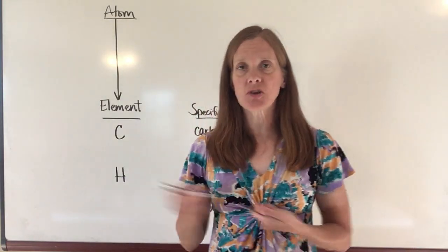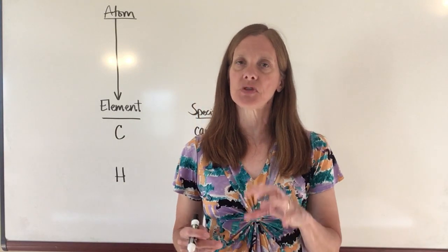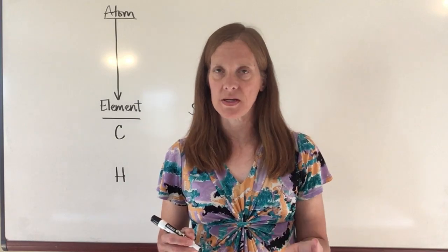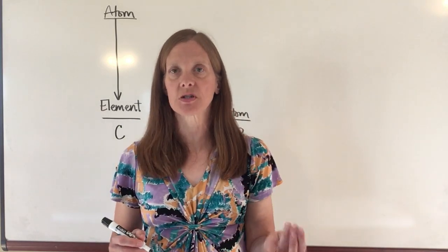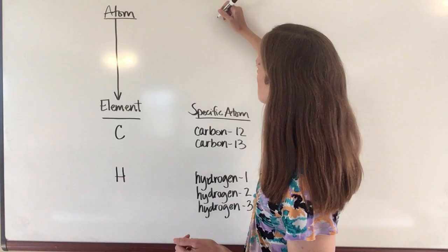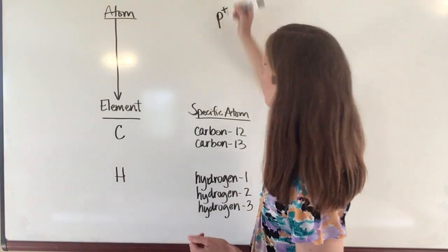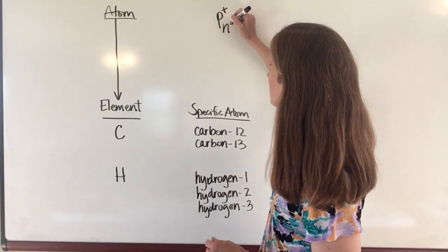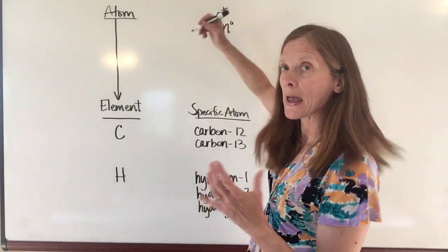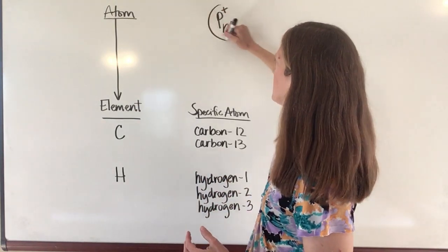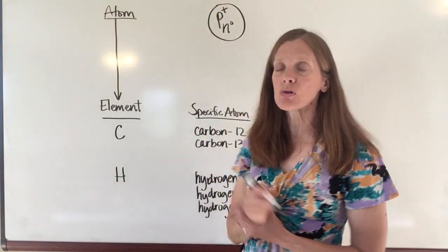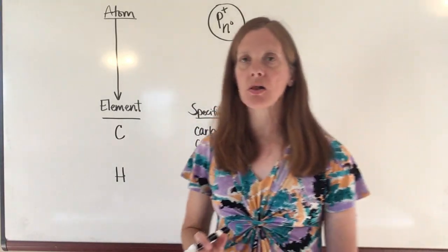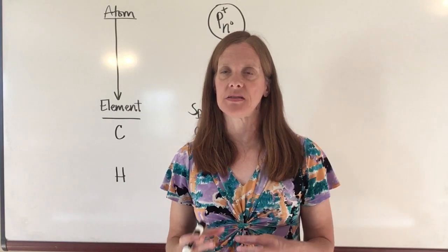Now the structure of the atom contains a number of different subatomic particles, but there are three main ones that you're expected to know. The first is a positively charged proton. The second is a neutral neutron that doesn't have any charge on it at all, and both of those are contained inside the nucleus of the atom. The proton and the neutron have almost all of the weight in the atom, almost all of the mass in the atom.